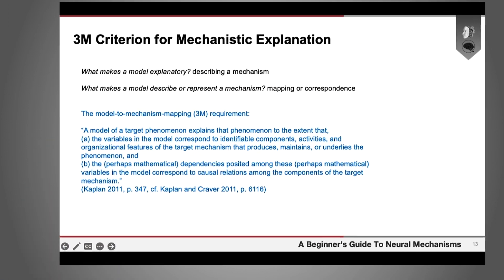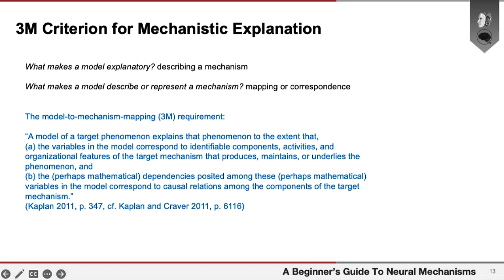Not every scientific model provides explanations. Some just describe data patterns or allow scientists to make predictions of future events. One of the things that philosophers have been interested to find out is what is it that makes some models explanatory and not others? And an answer that these philosophers have come up with, these are David Kaplan and Carl Craver, is that models provide explanations to the extent that they describe mechanisms. And then there's this further question about what does it mean, what are the conditions for describing or representing a mechanism?